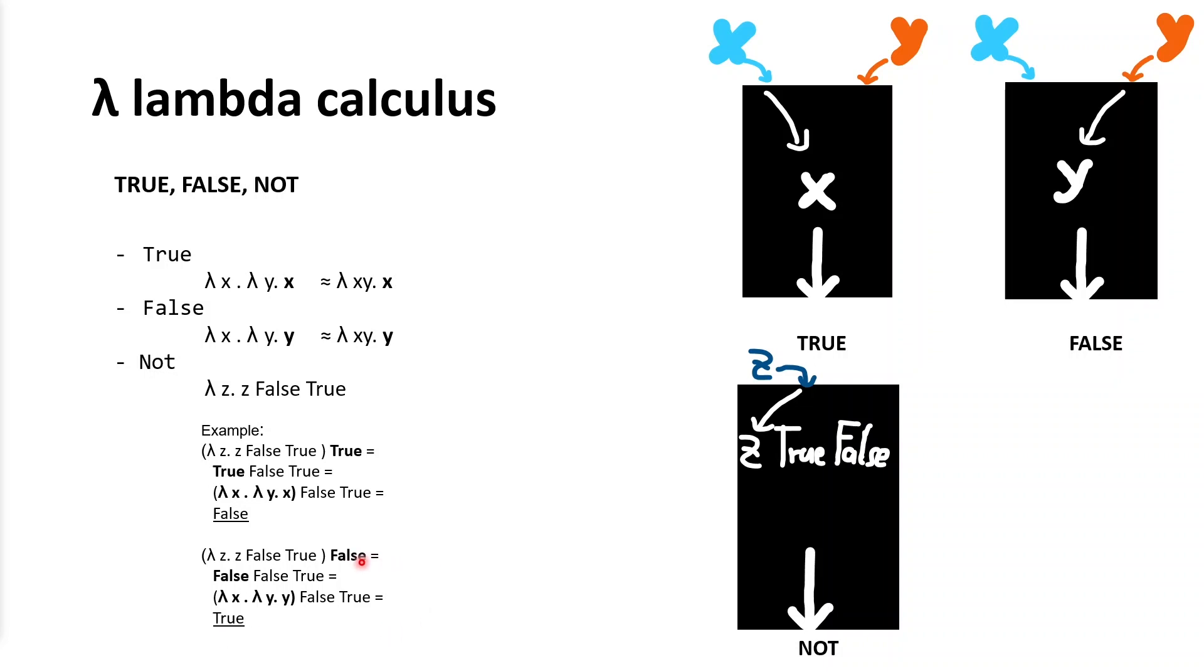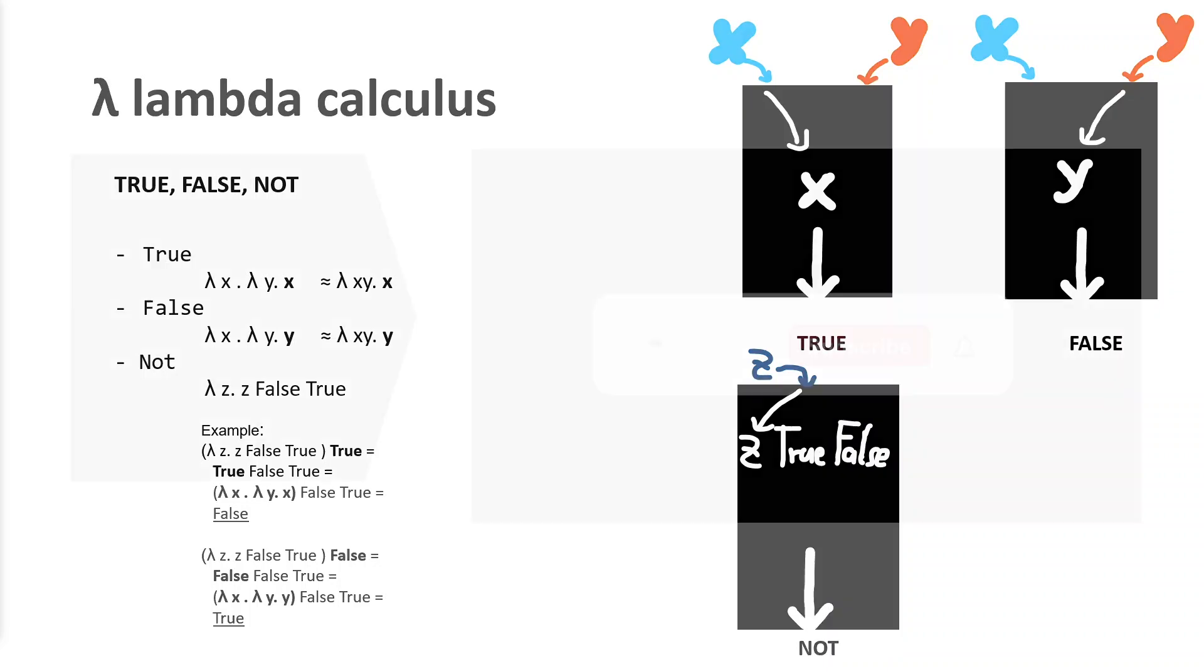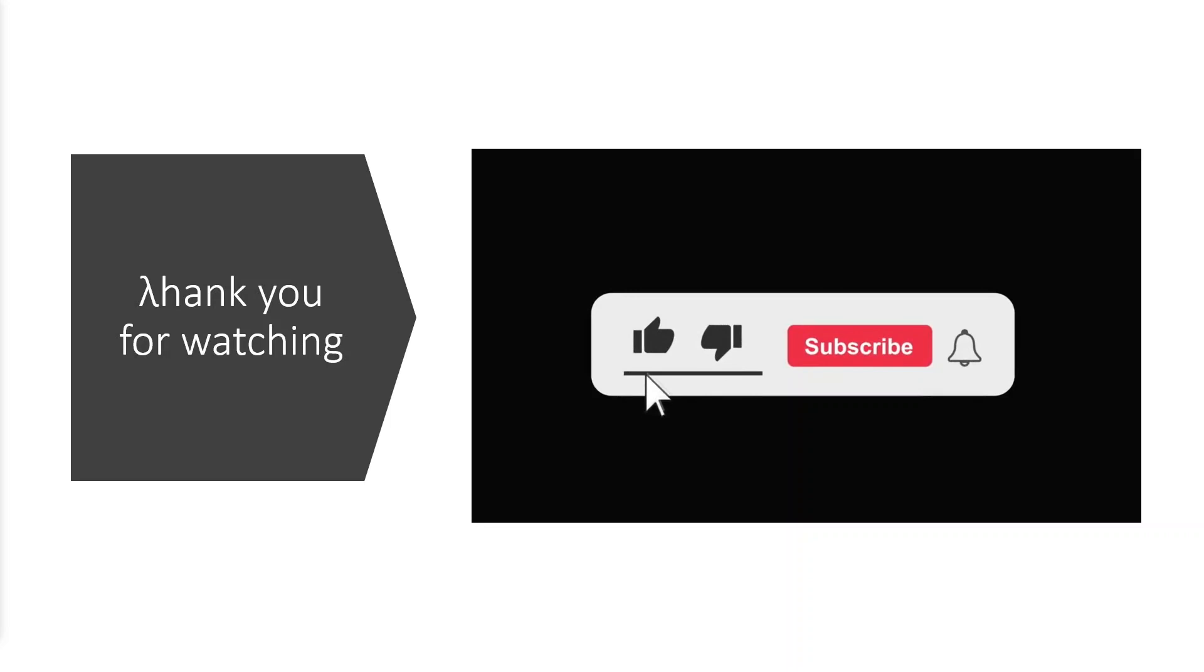And that is whole lambda calculus. Of course, we can define true, false, not with other variables and abstraction, but this example was easiest for explanation. That's it. I hope you enjoyed the video. Please don't forget to give like and subscribe.